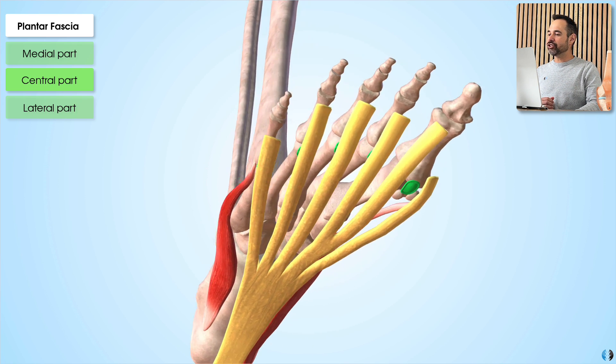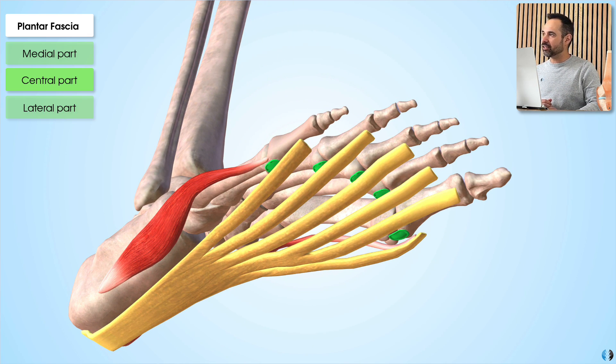When it does, it attaches to the plantar plates of the foot, which we can see as these little green dots here, which are small soft tissue structures that effectively allow for an attachment point to the metatarsophalangeal joints at the metatarsal heads, crucially important when we understand the windlass mechanism.